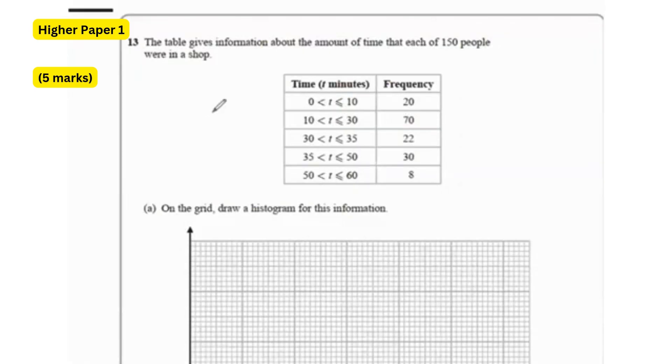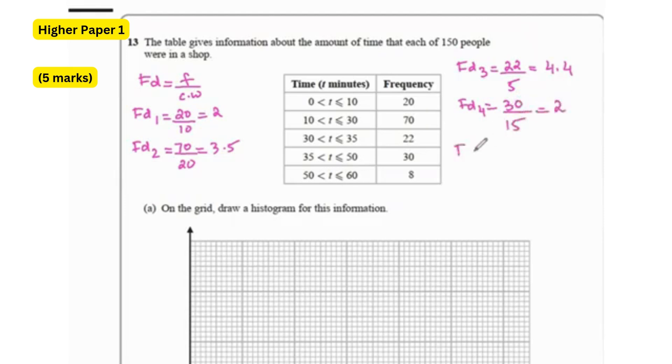Next question says the table gives information about the amount of time that each of 150 people were in a shop. On the grid draw a histogram for this information. So for a histogram, we need the frequency density. And frequency density has the formula of frequency over class width. So we find the first frequency density. That's going to be 20 divided by 10, which is 2. And for the second frequency density, that's going to be 70 divided by 20, which is 3.5. For the third frequency density, that's 22 divided by 5, which is going to give us 4.4. Fourth frequency density is going to be 30 over 15. That's 2. And the last one is going to be 8 over 10, which is 0.8.